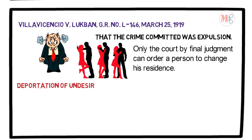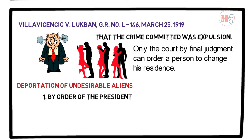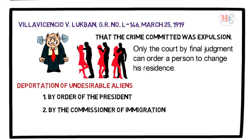Another authorized person or agency: under the present and existing laws, deportation of an undesirable alien may be effected in two ways. By order of the President after due investigation, pursuant to Section 69 of the Revised Administrative Code and Section 8, Chapter 3 of Executive Order No. 292, and by the Commissioner of Immigration upon recommendation by the Board of Commissioners under Section 37 of Commonwealth Act No. 613.